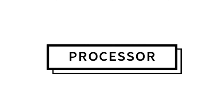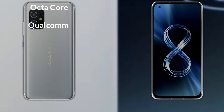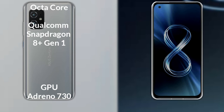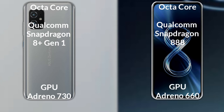Talking about the processor and GPU of both phones: the Asus Zenfone 9 has an octa-core Qualcomm Snapdragon 8th Generation Plus processor with an Adreno 730 GPU. The Asus Zenfone 8 has an octa-core Qualcomm Snapdragon 888 processor with an Adreno 660 GPU.